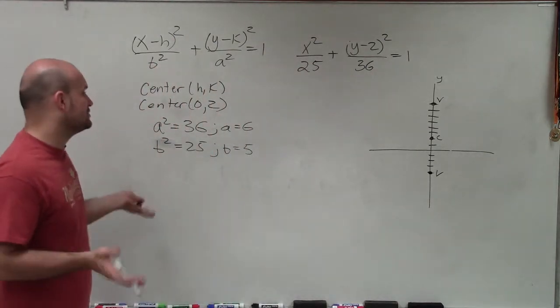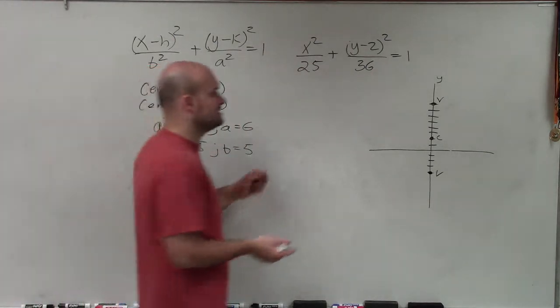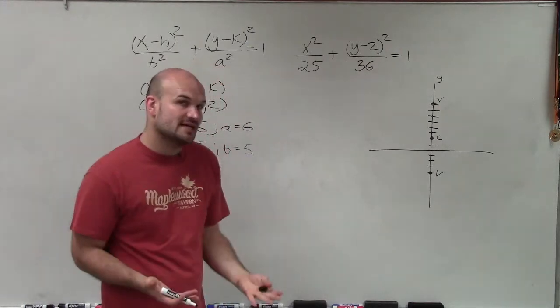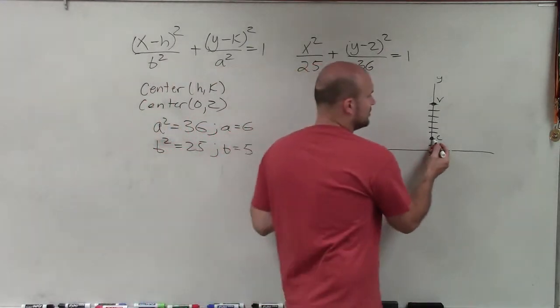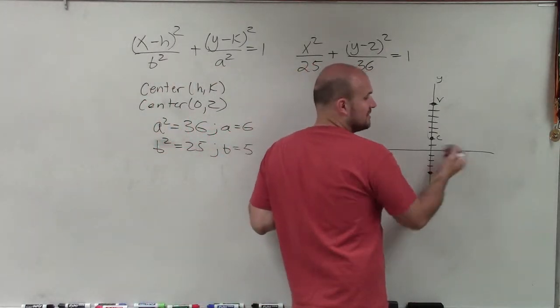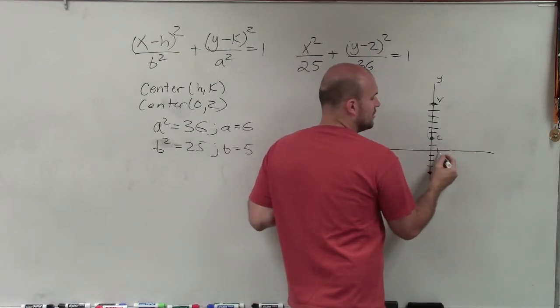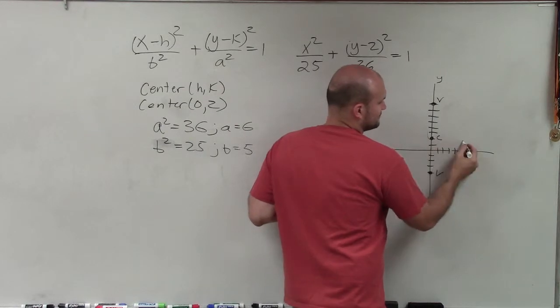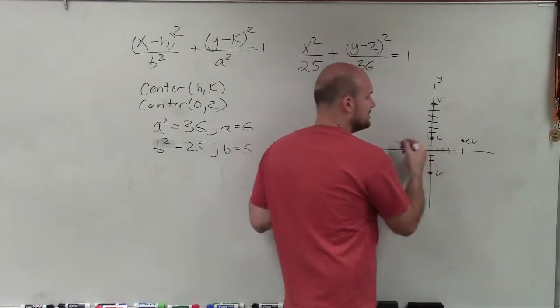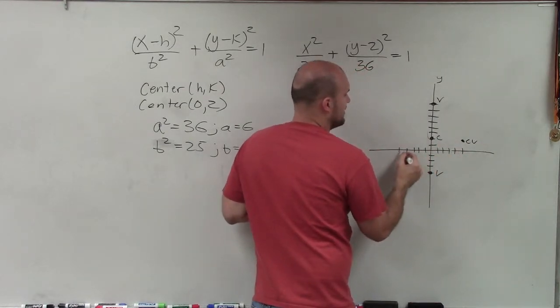Now the next thing is I need to determine the co-vertices. Well, the co-vertices are on the minor axis, which is perpendicular to the major axis. So instead of going up and down, the co-vertices are on the minor axis, which can be, in this case, to the right and left. So I'm going to go over 5 to the right, 1, 2, 3, 4, 5. And to the left 5, 1, 2, 3, 4, 5.